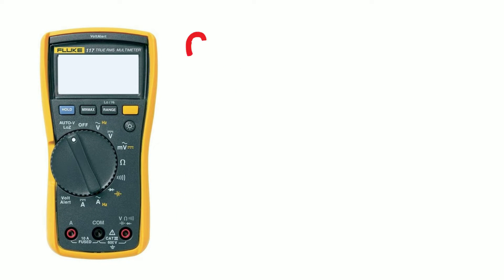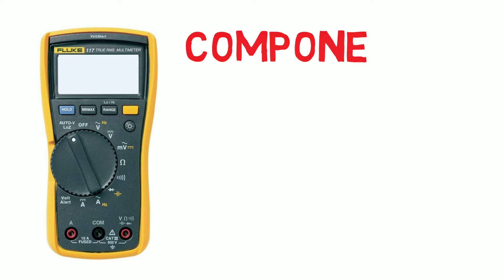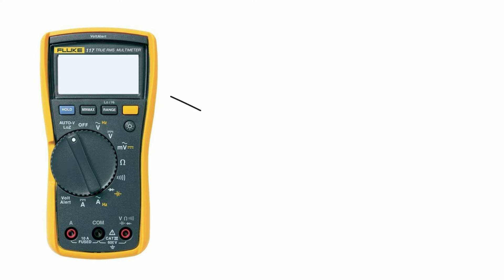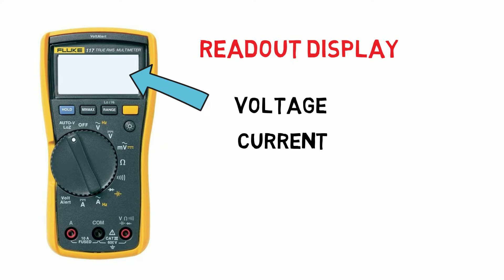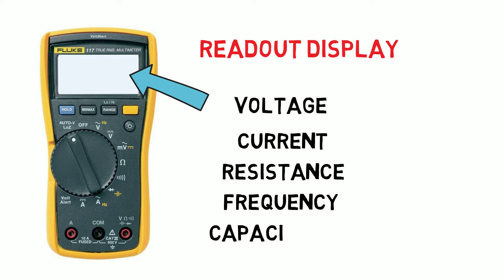Let's go over the components of a meter. Here is the screen or readout — it shows you the value of what you are measuring. This could be voltage, current, resistance, frequency or capacitance. The readout will give you units, a scale and other visual information about your measurements.